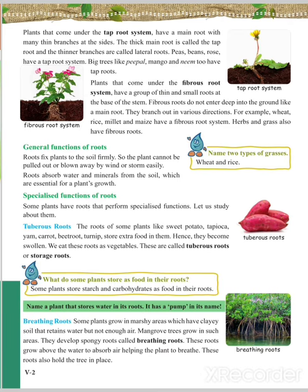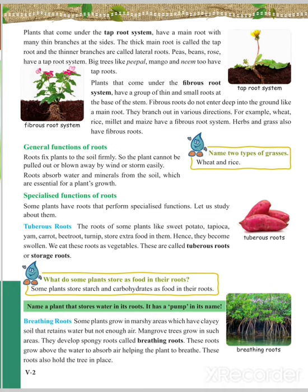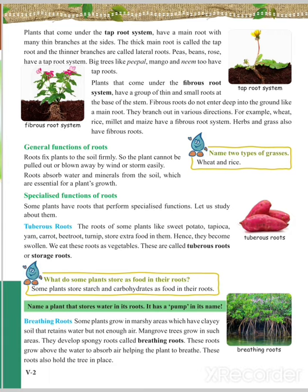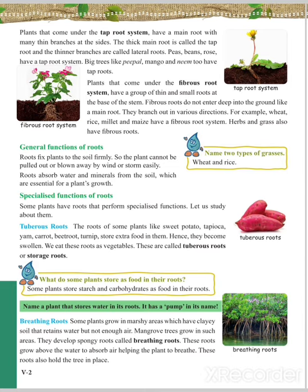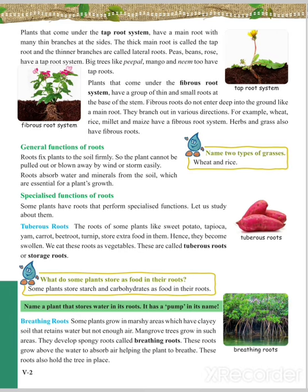Peas, beans, and rose have tap root systems. Big trees like poplar, mango, and neem also have tap roots. Tap roots hold the tree firmly, protecting it from heavy winds, and they also provide nutrients to the plant from the soil. Plants having tap roots survive for a long time.